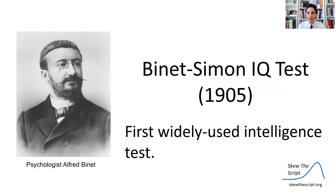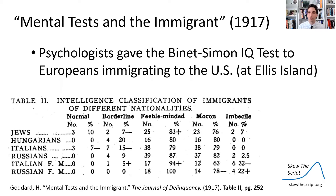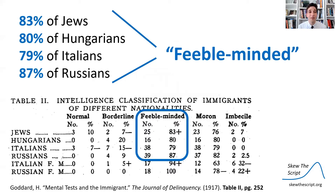The first modern intelligence test was developed by two psychologists in France. They called it the Binet-Simon IQ test, and it was the first widely used intelligence test in the world. In 1917, a group of American psychologists brought this test to the United States and used it on Europeans immigrating to the US through Ellis Island. Here is a table of their peculiar results from their original report. They found that 83% of Jews, 80% of Hungarians, 79% of Italians,